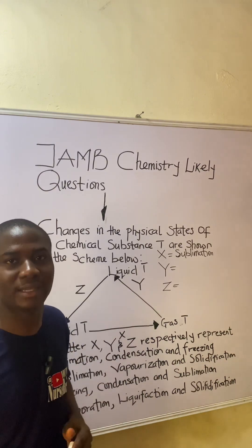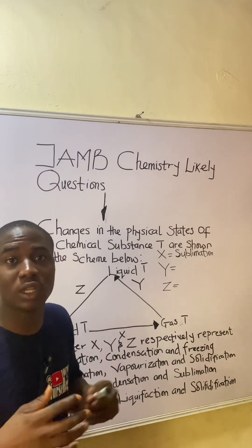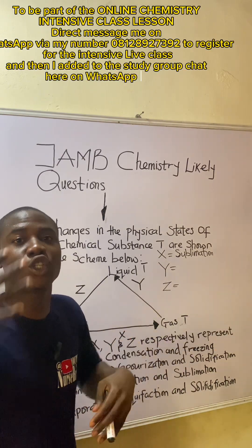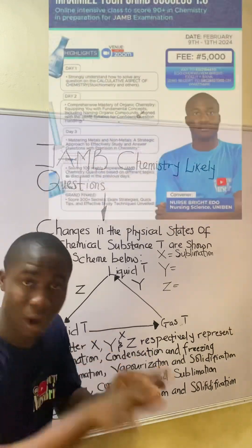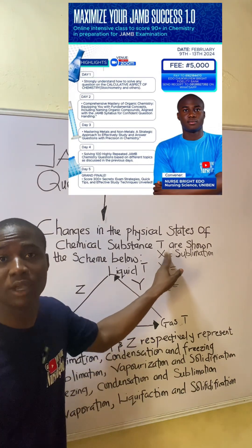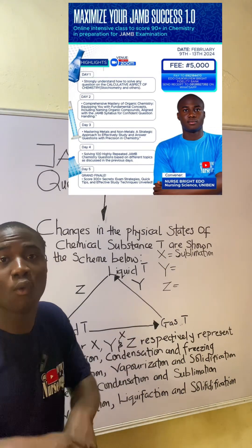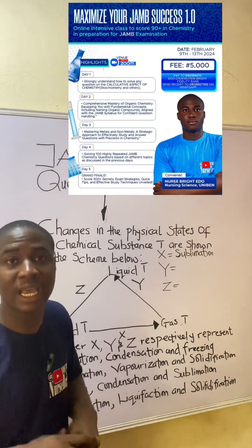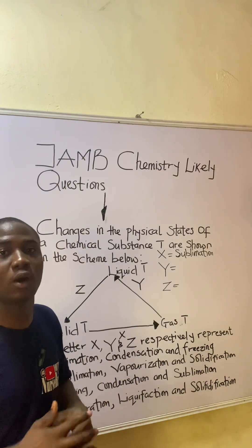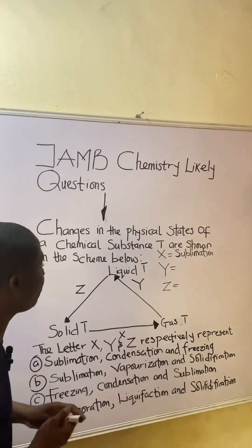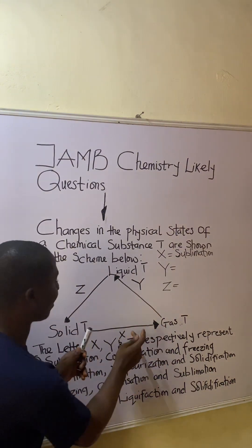Some common examples of sublimation: camphor is a solid substance that will just change to gas — you will no longer see it where you kept it. Dry ice (solid carbon dioxide) also undergoes sublimation, as do naphthalene and iodine. So X represents sublimation.